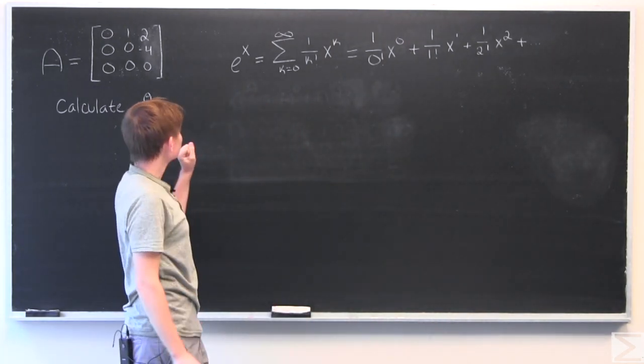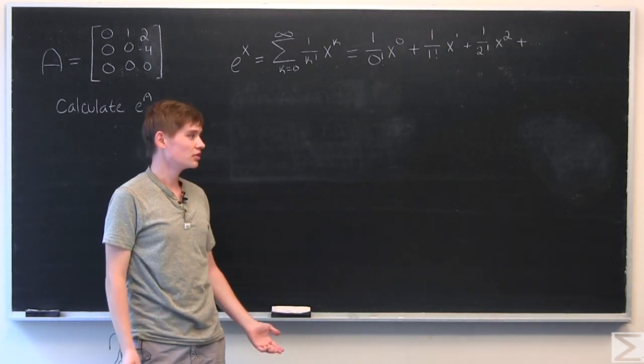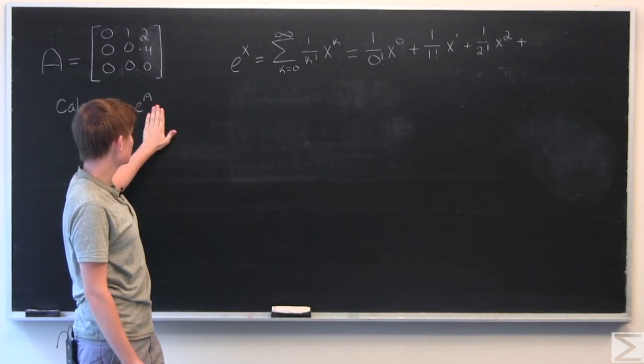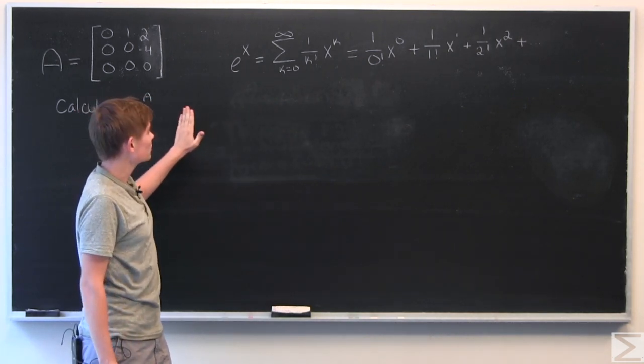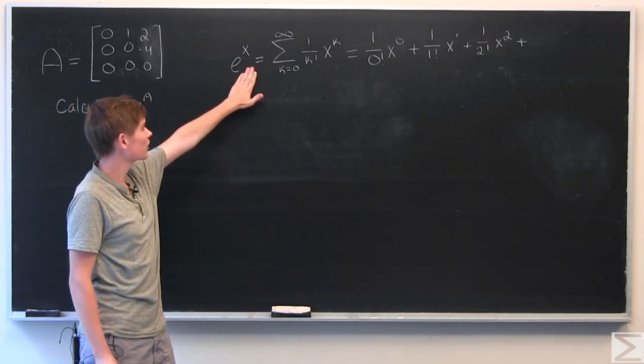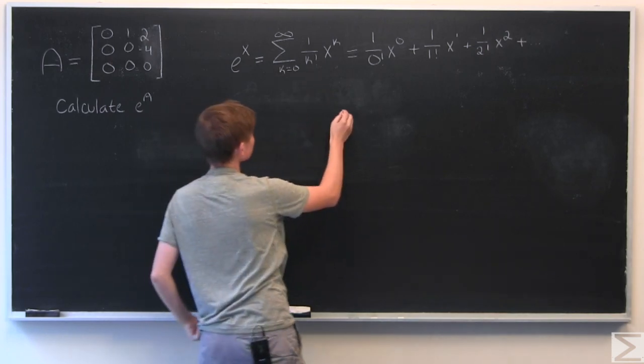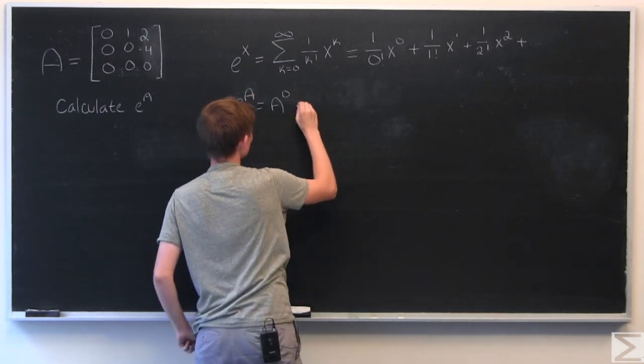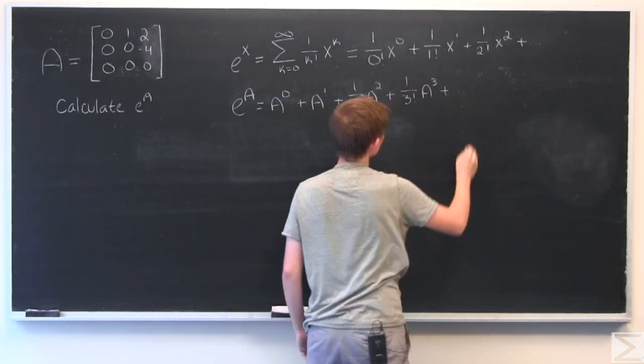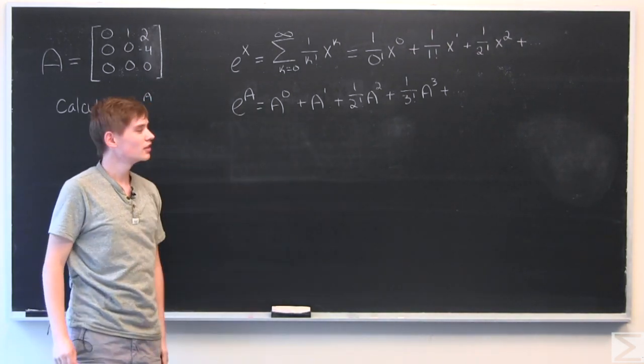So even though normally when we do e to the x we use numbers, we can also use the power series to calculate e to a matrix. And we do that by just plugging this matrix A for x in e to the x. So the power series will be this. Okay, and this will also go on to infinity.